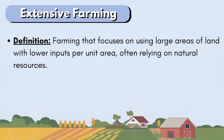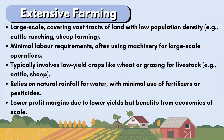Extensive farming focuses on using large areas of land with lower inputs per unit area, often relying on natural resources. It is large-scale, covering vast tracts of land with low population density — examples include cattle ranching or sheep farming. It has minimal labor requirements, often using machinery for large-scale operations, and typically involves low-yield crops like wheat or grazing livestock. Extensive farming relies on natural rainfall with minimal use of fertilizers or pesticides, and has lower profit margins due to lower yields but benefits from economies of scale.